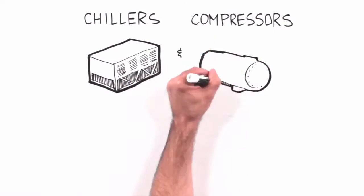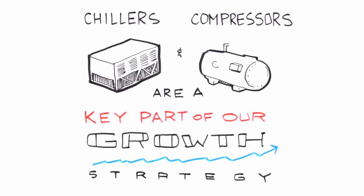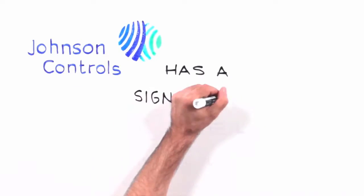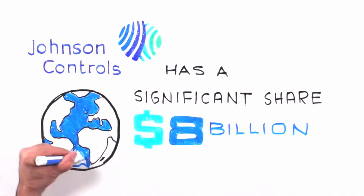Chillers and compressors are a key part of our growth strategy, where Johnson Controls has significant share in the $8 billion global chiller market.